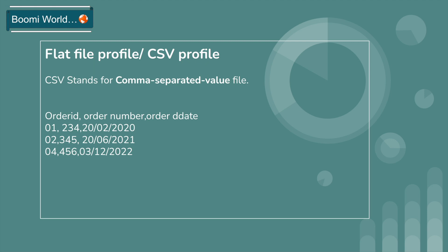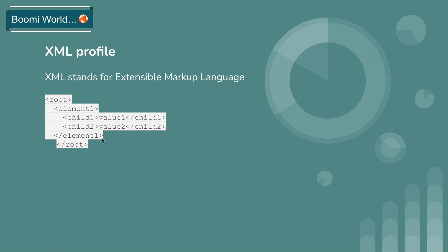What is flat file profile? Flat file profile is nothing but the CSV profile — comma separated value file. The sample flat file profile looks like this. And XML profile — XML stands for Extensible Markup Language. The sample XML profile looks like this.